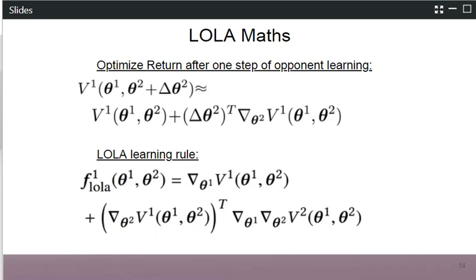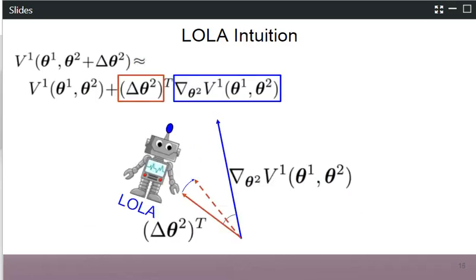If you find this confusing, let's look at the pictorial representation. The new return consists of the original return plus the Taylor expansion — a dot product between two vectors: delta theta2 (the learning step of the opponent) dotted with the gradient of the value function v1 with respect to theta2. This tells us how much Alice gains or loses when Bob is learning. Alice tries to increase that value by aligning Bob's learning step with her own incentive — reducing the angle between the gradient of the value function with respect to Bob's parameters and the learning step Bob is going to take.